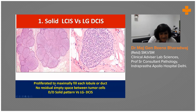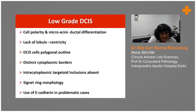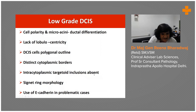The whole lobule is expanded, which will not happen in DCIS. In DCIS the cells tend to be more polygonal with distinct cytoplasmic borders. Those intracytoplasmic targetoid inclusions will be absent in DCIS. You will not have what is called a signet ring morphology, as we'll discuss later.